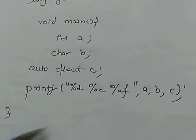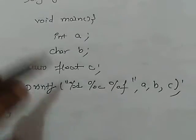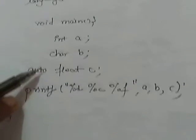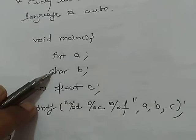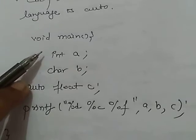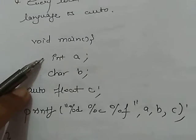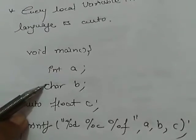So, we will get here the garbage value. One thing you must see here, if you haven't written auto before these variables, compiler will automatically place auto because the automatic storage class is the default class of any variable.